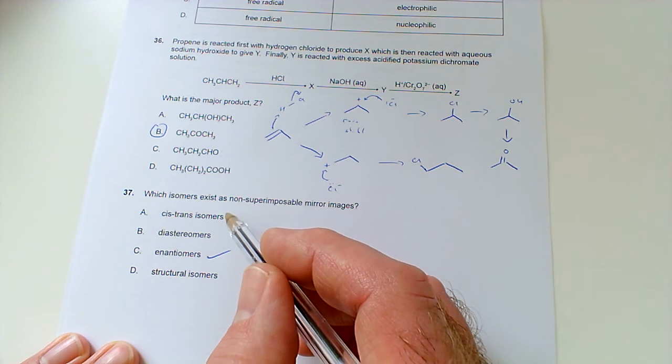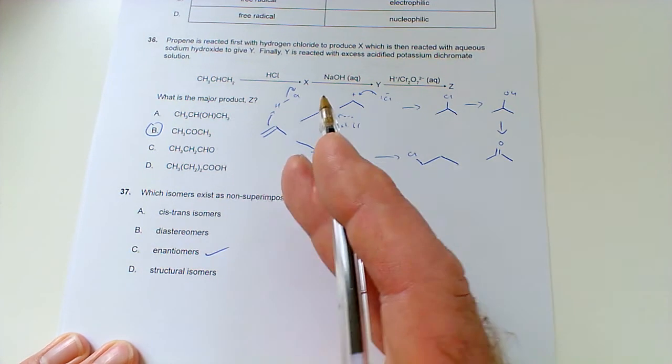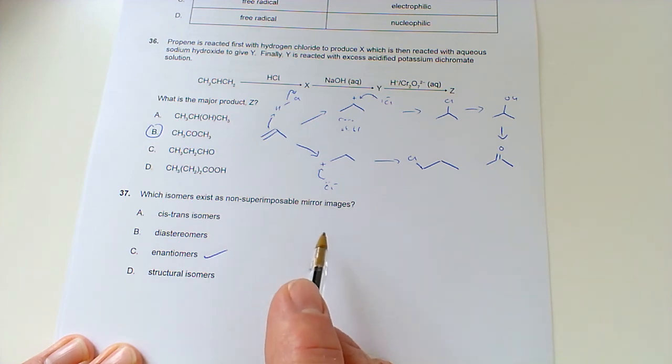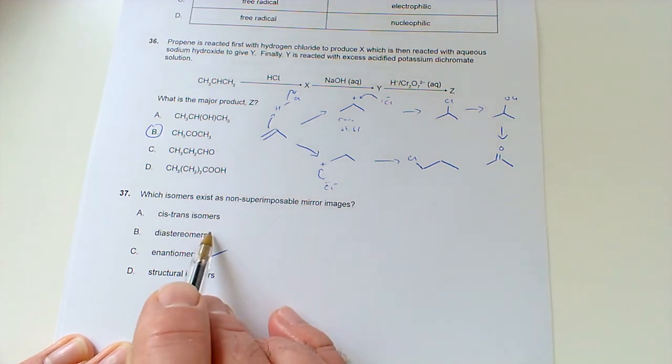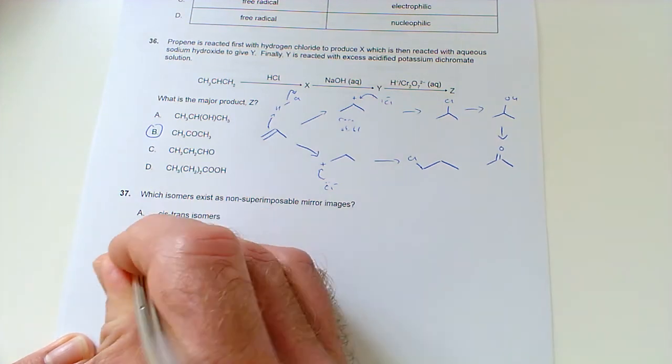Cis-trans isomers is, of course, when we've got carbon-carbon double bonds, or potentially ring structures with groups trapped on the same side of the ring, or opposite sides of the ring. Diastereoisomers is where a molecule has got two chiral centers, and then what you have is one of the chiral centers is the same in both of them, but then the other chiral center is different. And that means you can actually separate those quite easily. So, we're going to go with enantiomers.